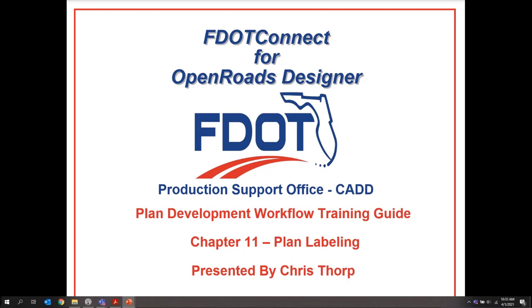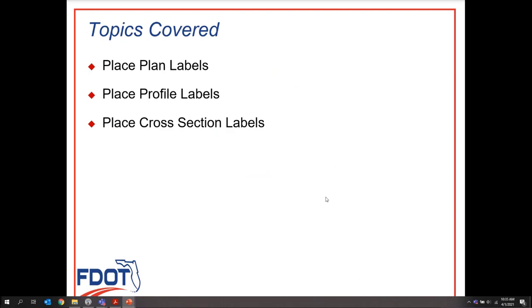Welcome back to the Plan Development Workflow video series for FDOT Connect. In this chapter, we're going to go over our labeling — plan labels, profile labels, and cross-section labels. This chapter introduces the new way of placing notes using the Place Label tool, which has replaced the PlanView Labeler tool that was previously found in Geopack.